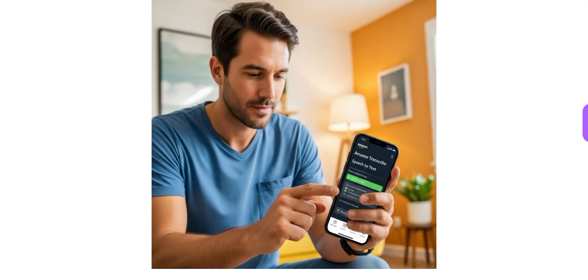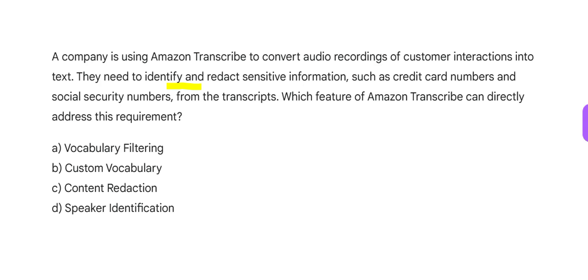The product we use is Amazon Transcribe — a service in Amazon that helps with speech-to-text conversion. Looking at the options, we want to address the requirement that credit card numbers, Social Security Numbers, and such PII — personally identifiable information — should be redacted or masked.